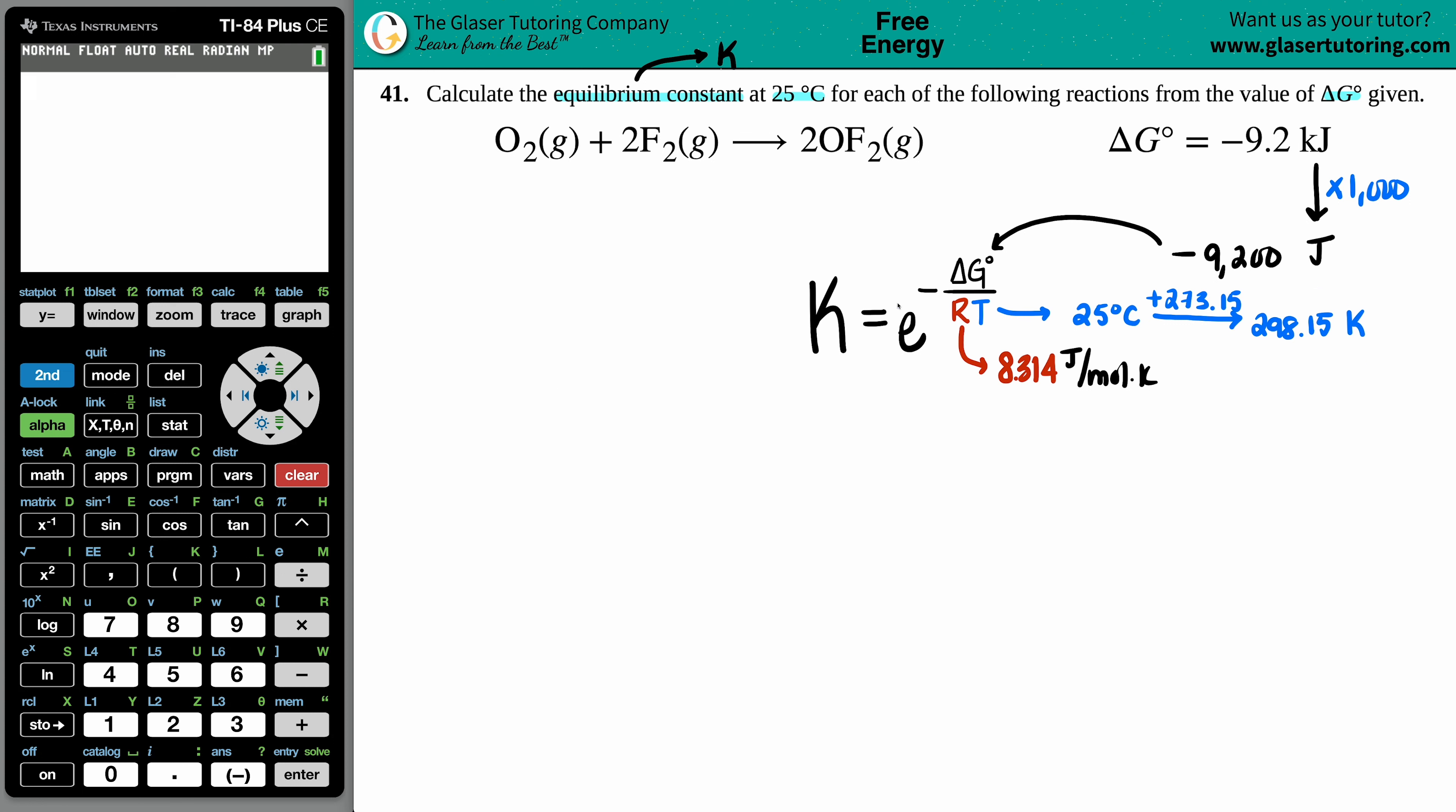So we got a delta G, the R, the T. The e is on the calculator, so let's plug this in and solve. So my equilibrium constant would be e raised to the negative, let's see, 9200 divided by, and then we have those two values, so we have 8.314, and then we're going to times it by the temp, 298.15.